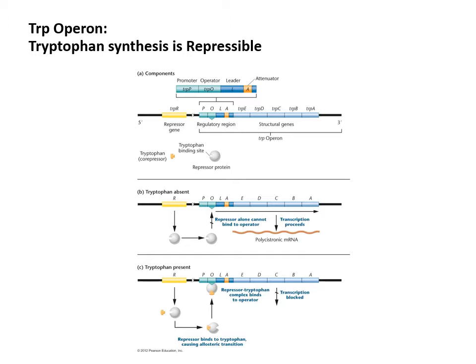Here we have another example of operon control and gene regulation — the trp operon, or the tryptophan operon. Notice this says tryptophan synthesis, so these enzymes are for making tryptophan. Using logic: if tryptophan is absent, the cell would want to make it, so transcription needs to be active. Whereas if tryptophan is present, why would you want to make more? That would be wasteful of resources. So if tryptophan is present, you're going to want this operon repressed.